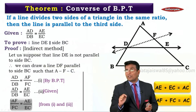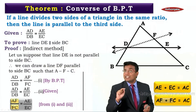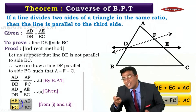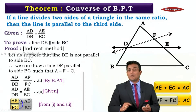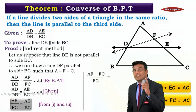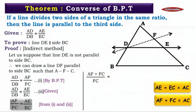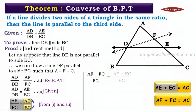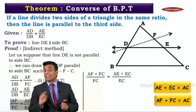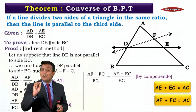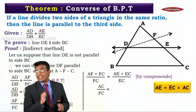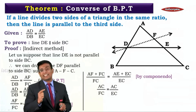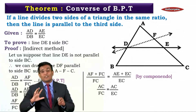We want AF + FC, which is a numerator plus a denominator, so we apply componendo. We get: AF + FC upon FC is equal to AE + EC upon EC — that is by componendo. Now, AF + FC is AC, and AE + EC is also AC, so we substitute that in.